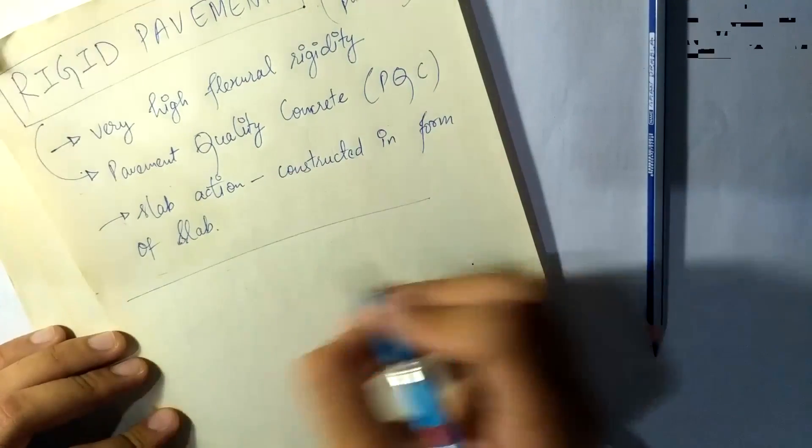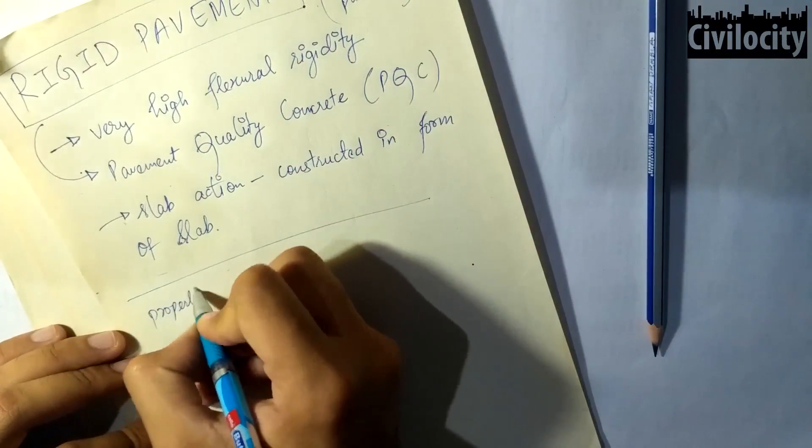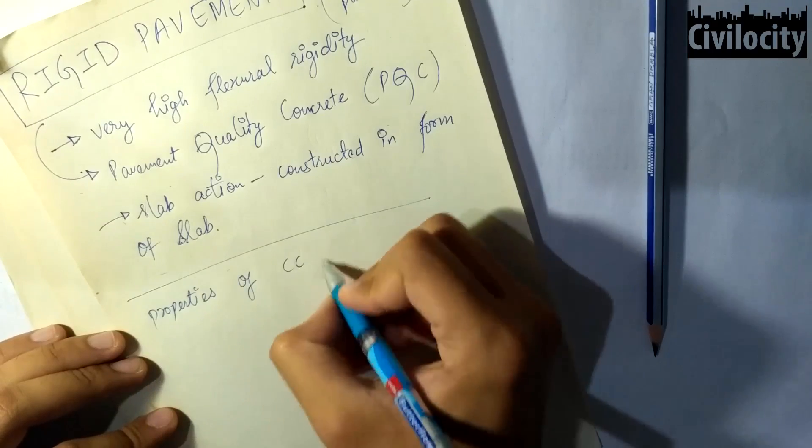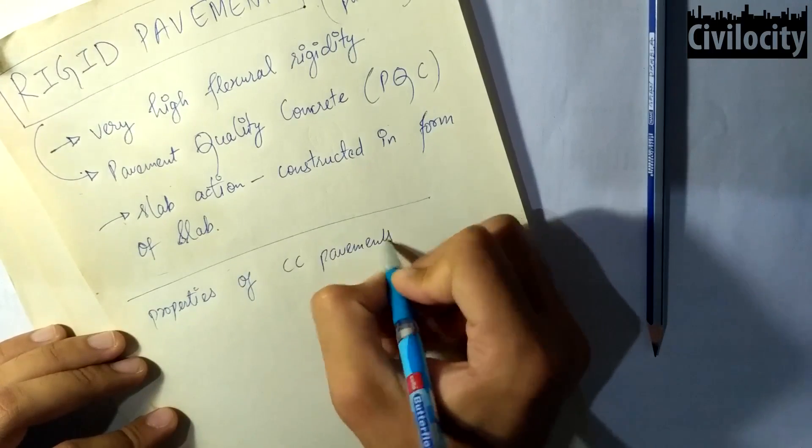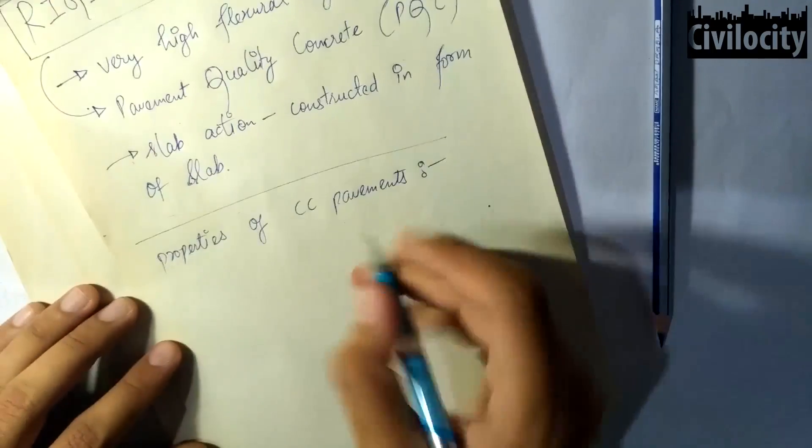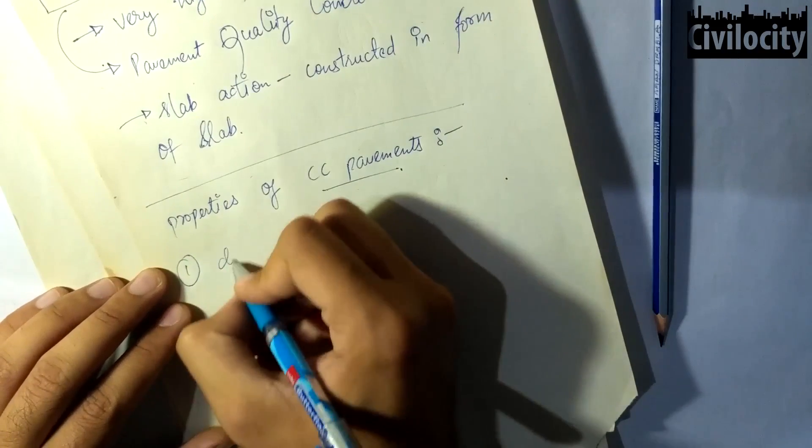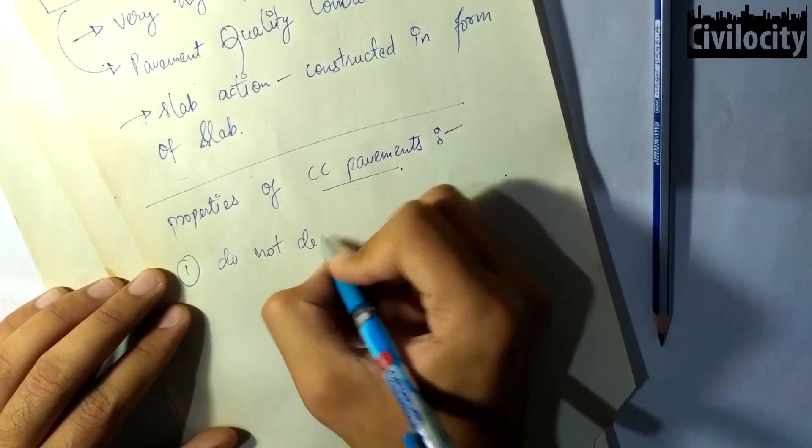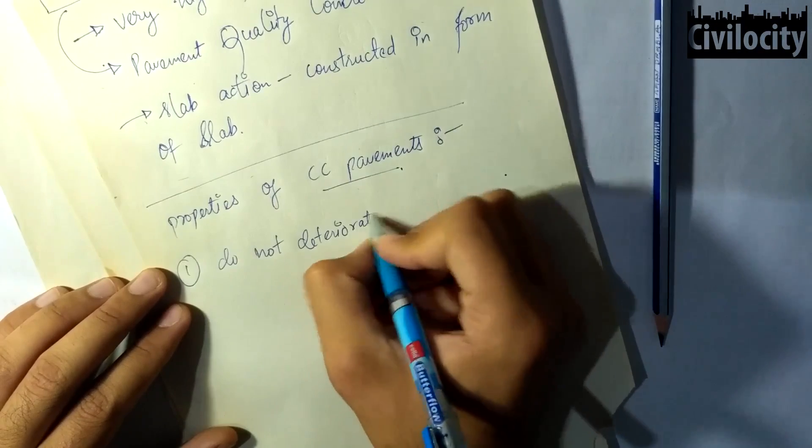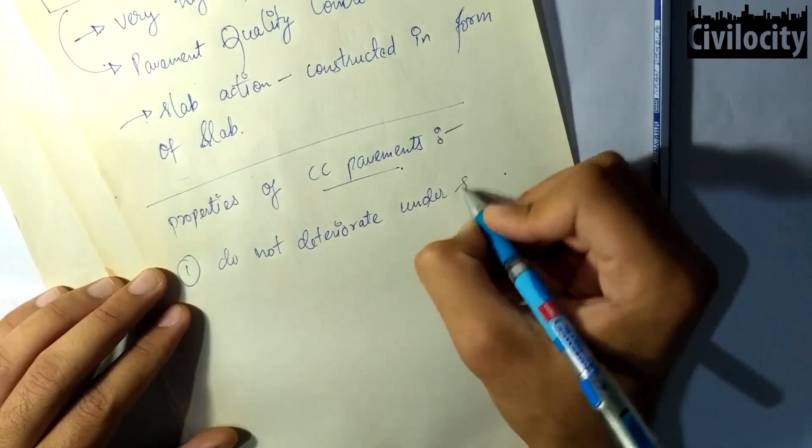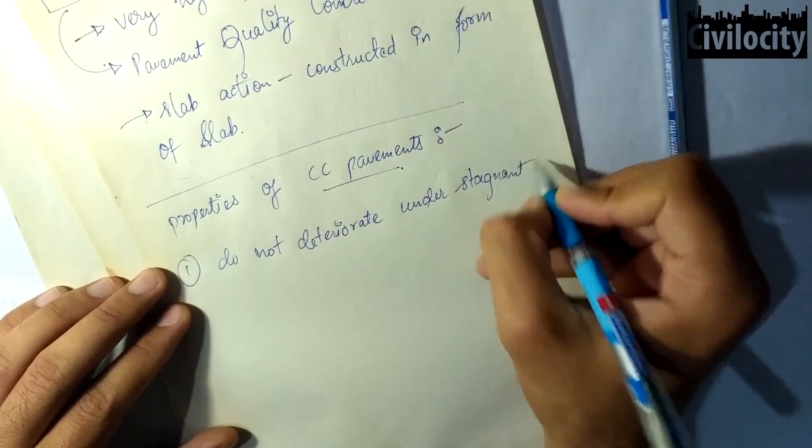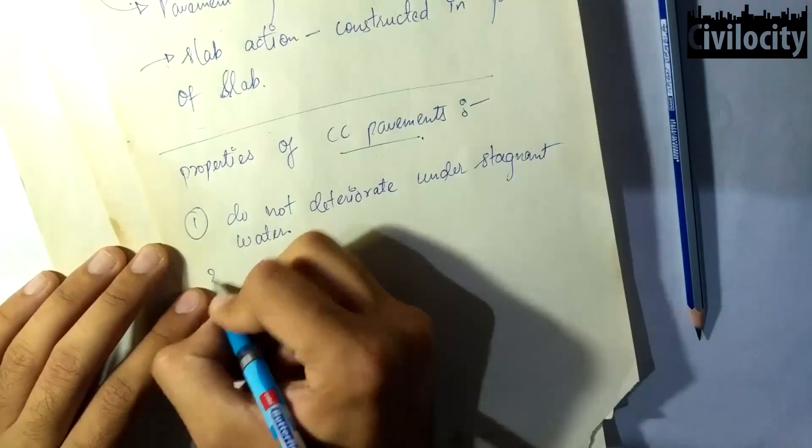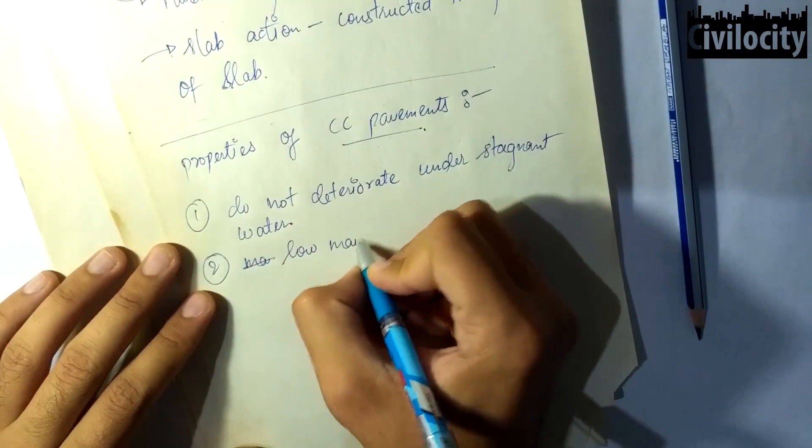Now let's talk about a few properties of cement concrete pavements. One of the biggest advantages of cement concrete pavement is they do not get deteriorated under stagnant water, which means that they can be successfully used in wet weather conditions. Also the maintenance and lifecycle cost of cement concrete pavements are much lower than that of flexible pavements.